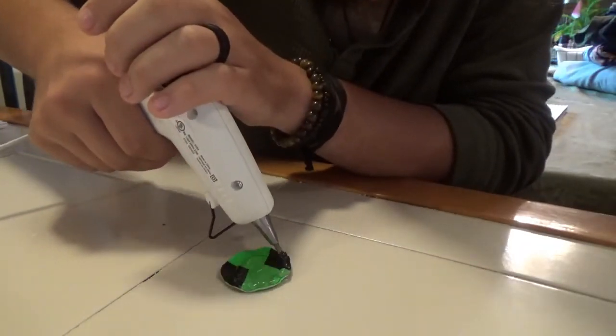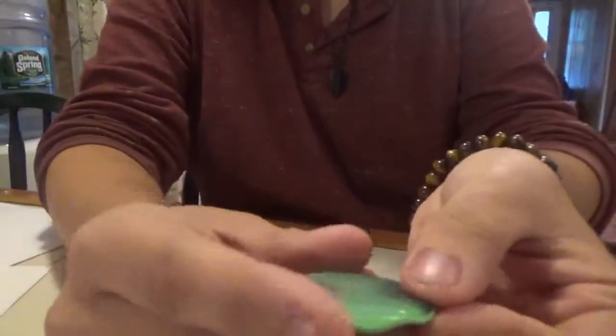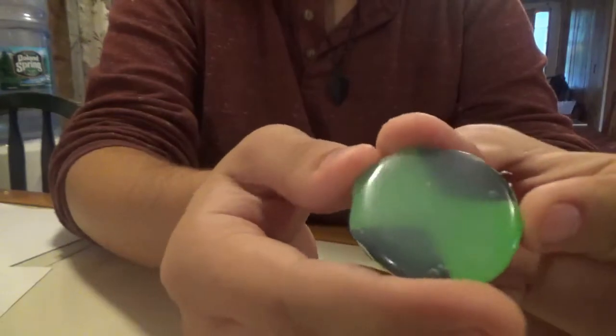Once this is done, use the hot glue to form a glossy bead over the symbol. Make sure not to make it too thick or it will come out foggy and you'll have to repeat this step like I did.